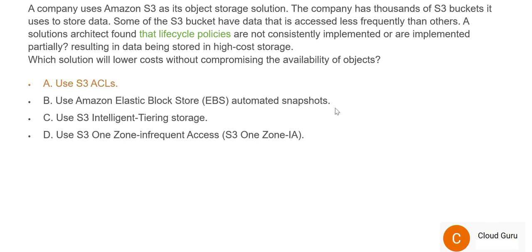Option A says to use S3 ACL — Access Control List. This will not solve it. The data is already in the hot tier, not moved to deep archive as it should be. Giving ACL access doesn't help with storage cost at all. Option A is totally wrong. Option B is also a useless option — they're suggesting using EBS, which is Elastic Block Store, a storage for EC2 instances. Here we're talking about S3. There is no link between S3 and EBS — they are two separate entities. Option B is also wrong.